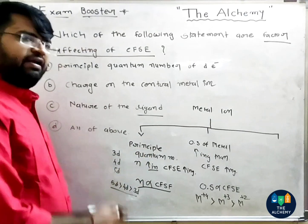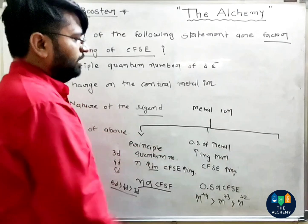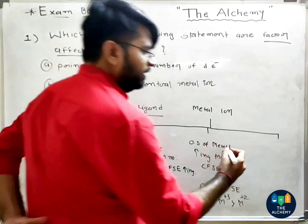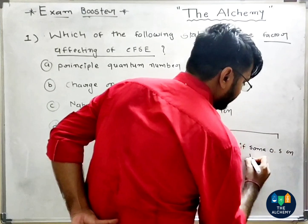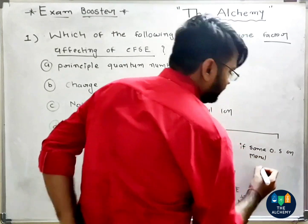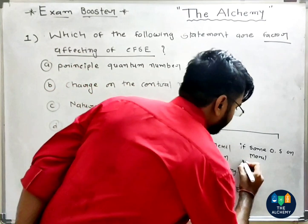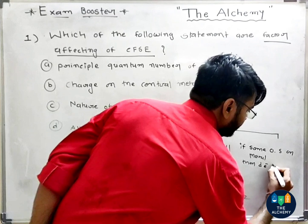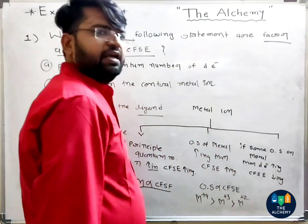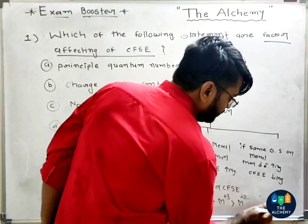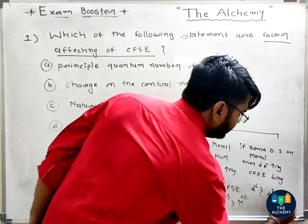The fourth and last point: if we have the same oxidation state on the metal, then as the number of d-electrons increases, CFSE decreases. So d6 has greater CFSE than d7, which is greater than d8.